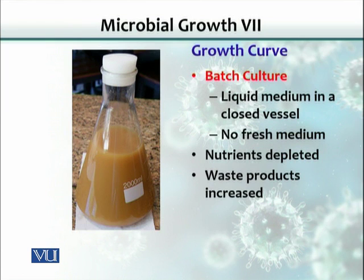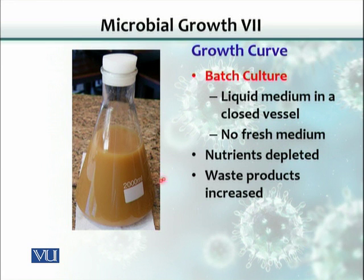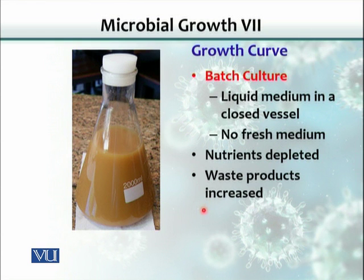A batch culture is when we grow an organism in a liquid medium in a closed vessel. The bacteria grow in this liquid medium and we do not refresh the medium. As the bacteria grow, the nutrients get depleted and waste products increase. Many of these waste products are acids, which change the pH and essentially kill the organisms — so they're not getting enough nutrition and are also being killed by the pH change.